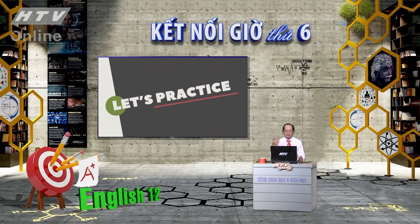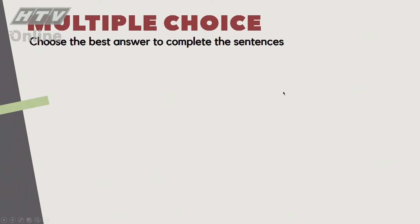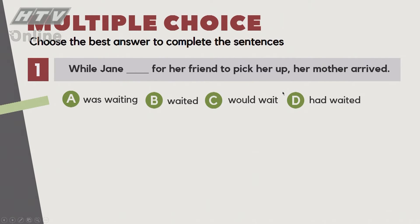Lý thuyết không nhiều, chúng ta thử làm bài tập. Bài tập đầu tiên là multiple choice questions - chọn đáp án đúng để điền vào chỗ trống. Câu số 1: 'Why did Jane plan for her friend to pick her up? Her mother arrived.' 'Her mother arrived' là quá khứ, nên những cái kế hoạch đó cũng là quá khứ. Đáp án A là đáp án chính xác.